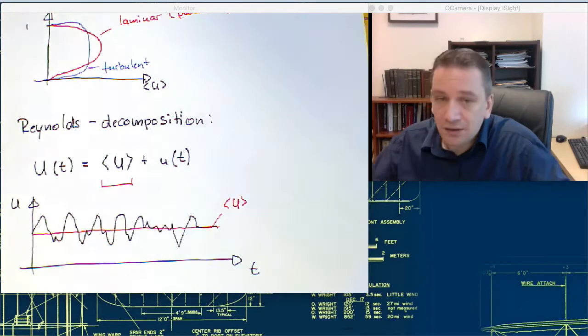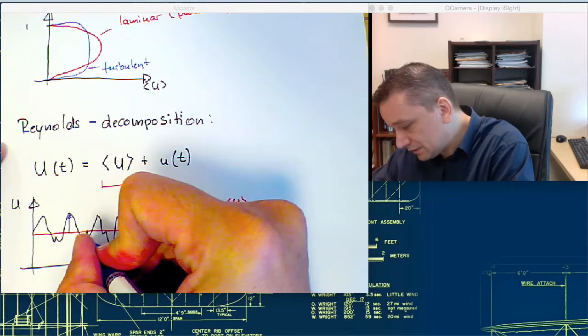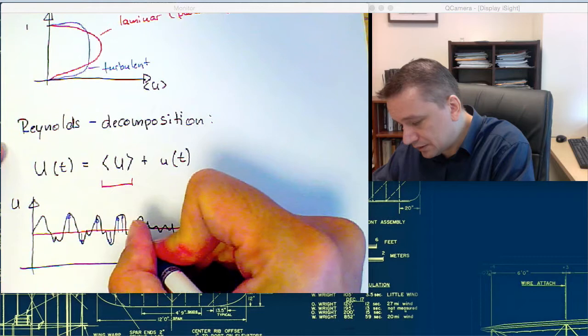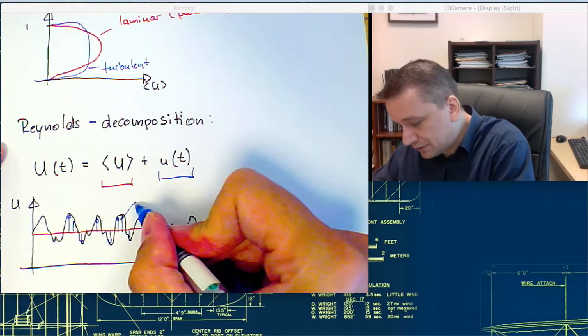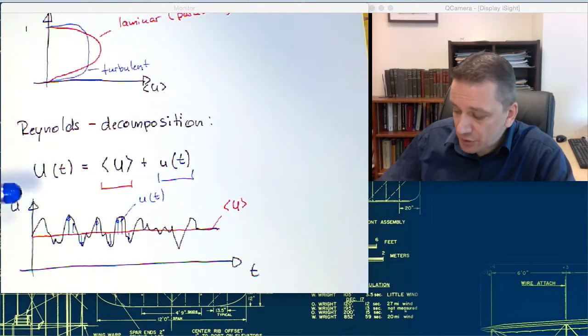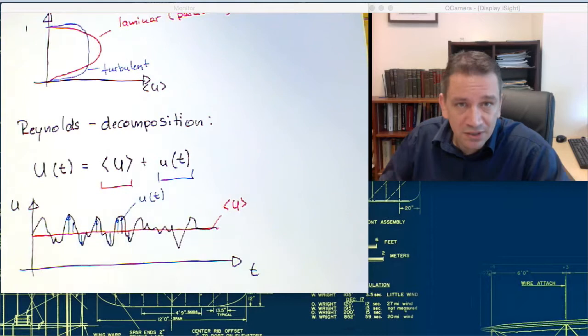So this one would be this part, and all of these values over here, the changing part, this one would be u of t. So this one would be still a function of time. It does subtracting the mean value.